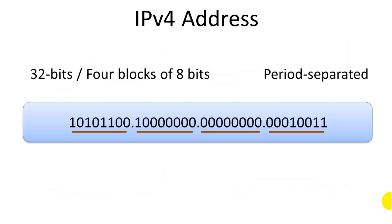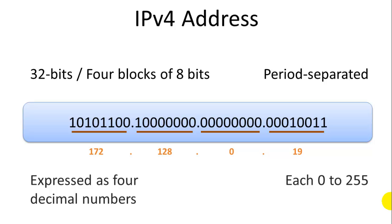IPv4 addresses in review: they're 32 bits — 4 blocks of 8 bits — and they're separated by a period, so they're expressed as 4 decimal numbers. IPv4 uses decimal numbers, only up to 3 digits each, so it's only up to 12 digits in an IPv4 address. Each of these decimal numbers ranges from 0 to 255.